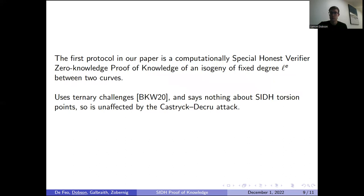We've actually proposed two schemes in our paper. The first is a zero-knowledge proof of knowledge of an isogeny of fixed degree L to the E, some smooth degree isogeny between two curves. It uses ternary challenges and actually doesn't include any information about the two torsion points in SIDH. It's just knowledge of an isogeny between two curves. This scheme is actually completely unaffected by the attacks on SIDH.